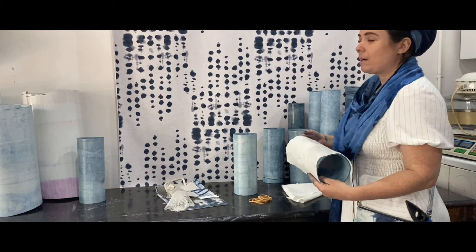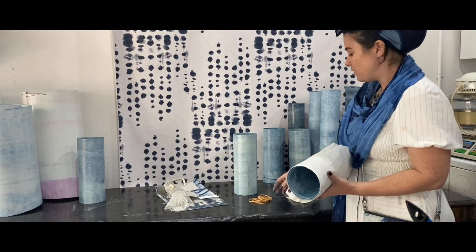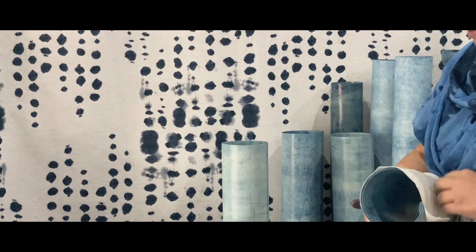Arashi is a technique where you bind around the pole. In Japan you would use a bamboo rod, we're just using these cylinders. What we do is we just want to place something around the pole that is going to resist the dye.